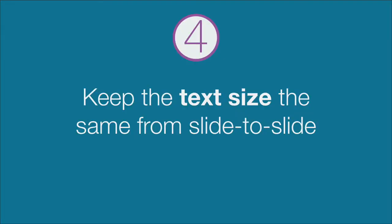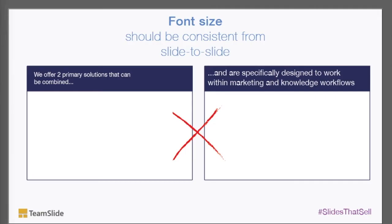Tip number four: keep the text size the same. Maintaining a consistent font size can help keep your PowerPoint presentation polished. Make sure the text size is the same from slide to slide in both the title and the body text. You can manually change this or consider using the slide master again to format the presentation. The consistency of text sizes will add professionalism and uniformity. You can see in this example there's a big jump in font sizes from a smaller size to a larger size — I'd recommend adjusting this so that they're somewhere in between.